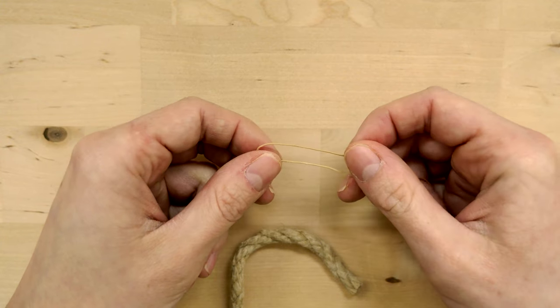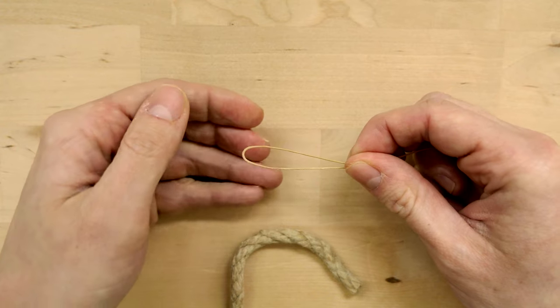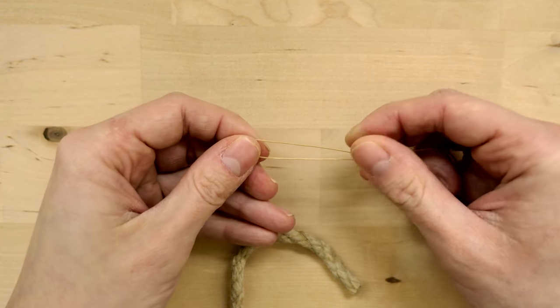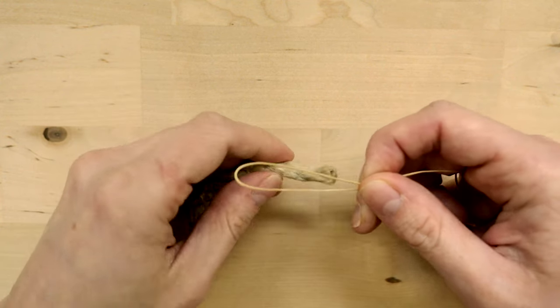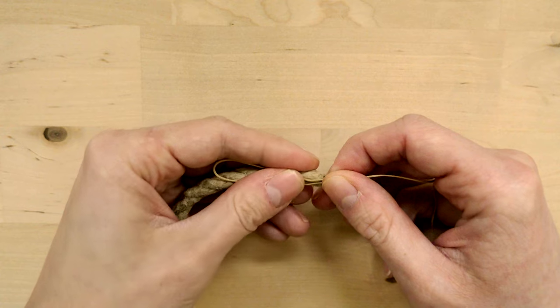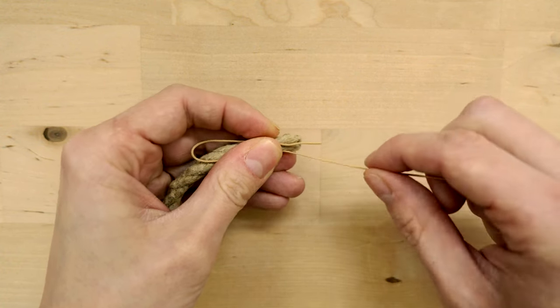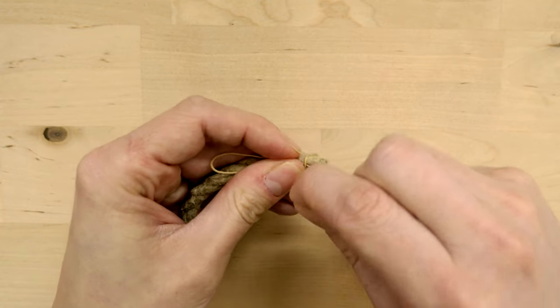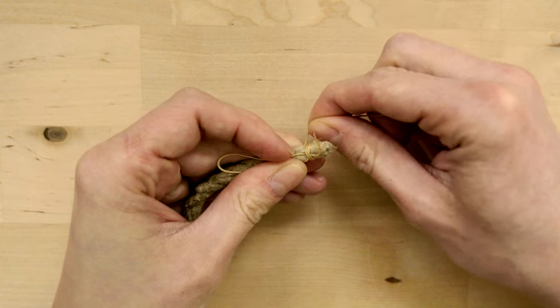The first step in making a common whipping is to fold a small section of your thread or cord like this, basically creating a bite. Take this bite and place it over your rope and then with the long end we're going to start wrapping around our rope like this and wrap around tightly.